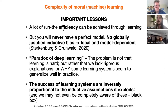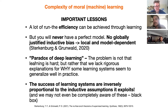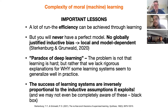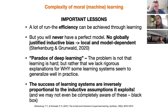While a lot of runtime efficiency can be achieved through learning, you will never have a perfect model — there's no globally justified inductive bias, though local and model-dependent ones may work in particular instances. There's a paradox of deep learning: the problem is not that learning is hard, but rather that we lack a rigorous explanation for why some learning systems seem to generalize well in practice. In the modern era with massive clusters of supercomputers doing enormous amounts of computing, this defines the limits of this kind of analysis. The success of learning systems is inversely proportional to the inductive assumptions they exploit, and we may not be completely aware of this — this is part of the black-box problem of sufficiently large deep neural networks.